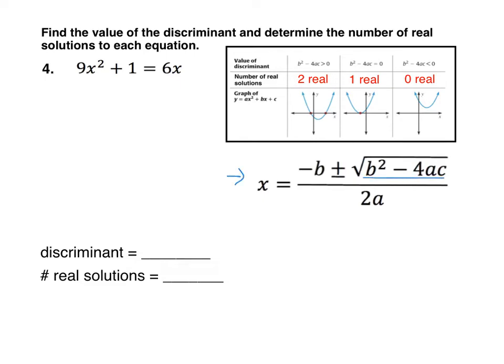Remember the discriminant is just the b squared minus 4ac, and the value of the discriminant determines whether our solutions are going to be two reals, one real, or no real solutions.